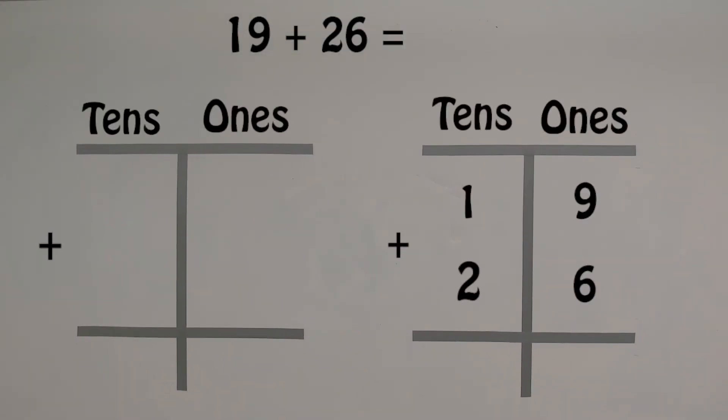Let's check our answer using the counters. Let's add 19 and 26 using a place value chart.